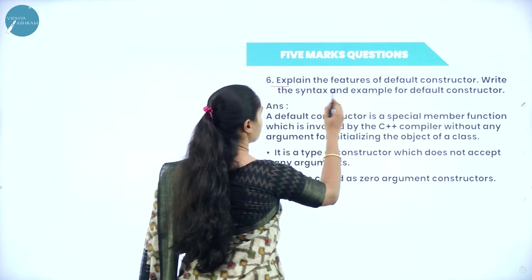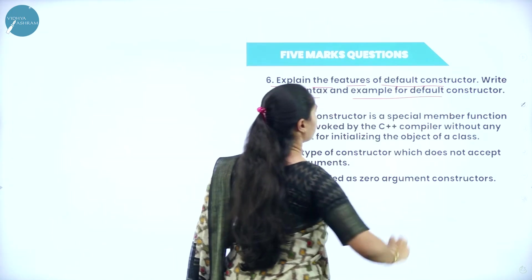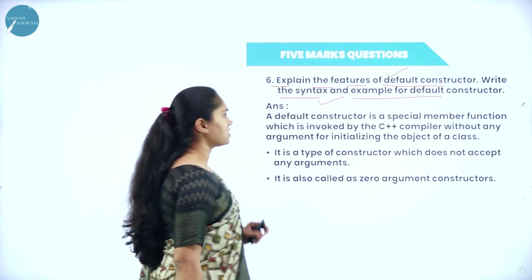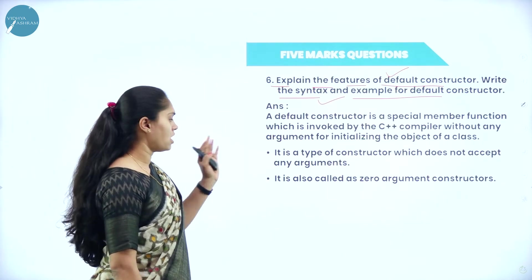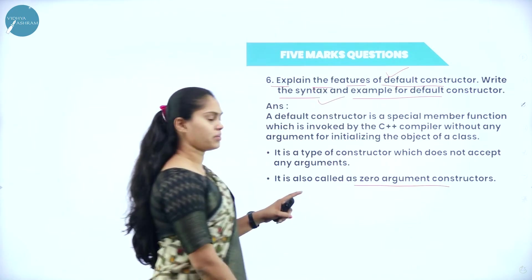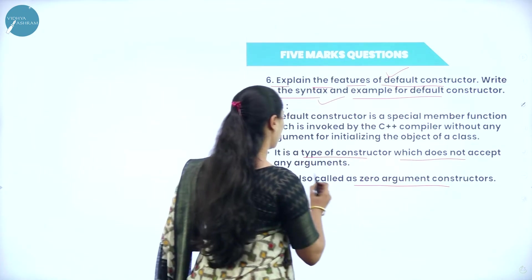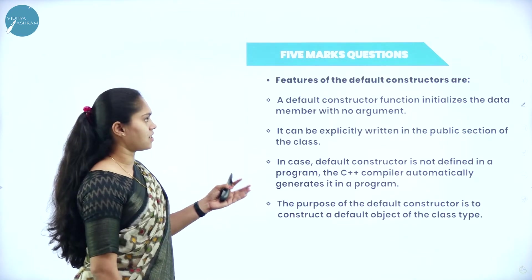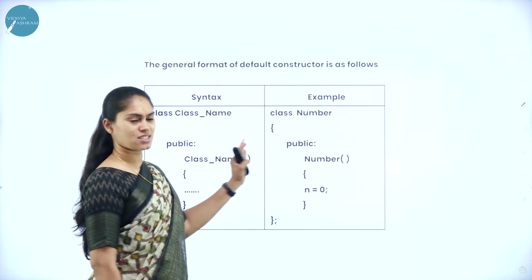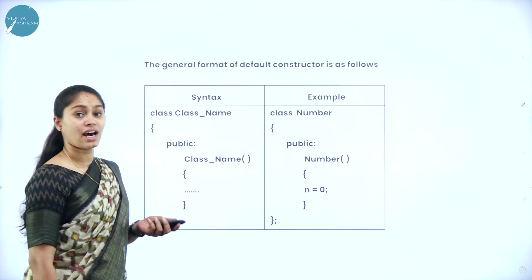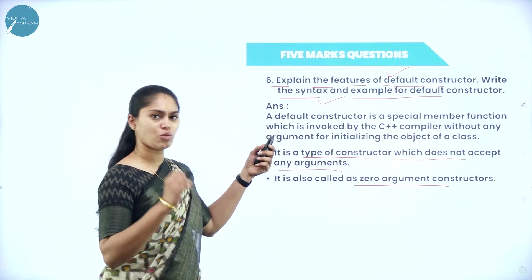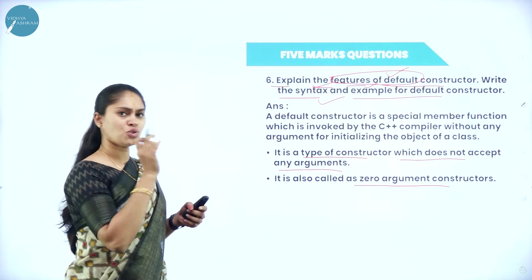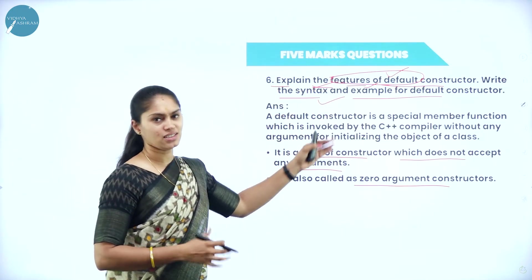Next, explain the features of default constructor and write the syntax and example. We have already discussed the syntax and example along with the features. If it is not accepting parameters, it is the default constructor — also called a zero argument constructor. Remember this point: any type of constructor which does not accept any argument will be considered as a zero argument constructor. So you have to write all the content — features, syntax, and example — for the five mark question. Analyze the question properly and write whatever they have asked.